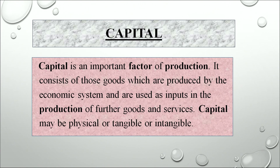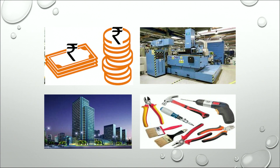The third factor of production is capital. Capital consists of those goods which are produced by the economic system and are used as inputs in the production of further goods and services. Capital may be physical, tangible, or intangible. Examples of capital include money invested in business, machinery, buildings, and loose tools — these all comprise capital. The amount of capital required depends on whether one is working in a small scale industry or a large manufacturing sector.